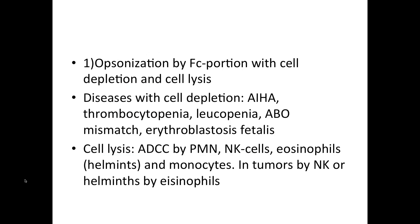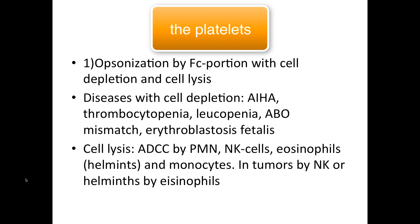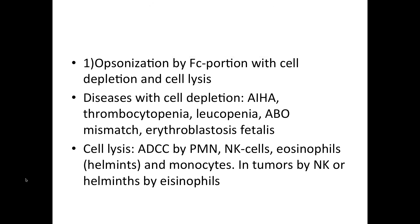Thrombocytopenia can be due to immune thrombocytopenic purpura. In this case, you will have antibodies that bind to the GP1B, 2B, or 3A receptors of the platelets, which then get stuck in the spleen and are digested by the splenic macrophages. This can be categorized into acute and chronic. Acute occurs in children after a viral infection, while chronic is usually associated with SLE — most likely a female in her reproductive age.